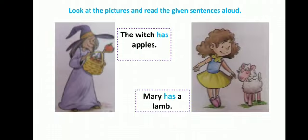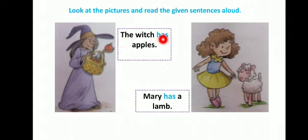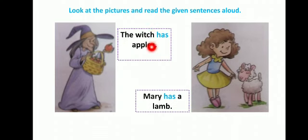Now let's proceed to another picture with sentences. See here, this is the picture of a witch. The witch has apples. Has क्यों use होगा? Witch जो है, वो woman है, और woman के लिए she use होगा। So she के साथ has आएगा। The witch has apples.